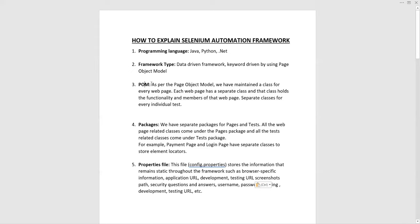In the Page Object Model, you create classes that contain the functionality and members of each webpage. You keep all these classes in the page object model structure. In those page classes you mention the locators — the elements, XPath, or CSS selectors — and all the related methods are written in those classes.